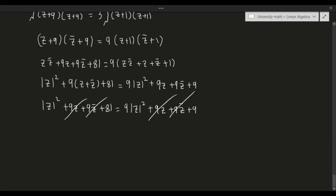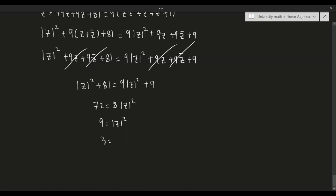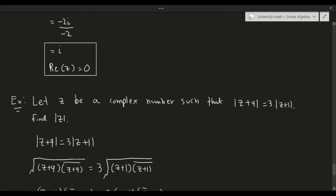Simplifying: 72 = 8|z|², so |z|² = 9. Taking the square root (absolute value is always positive): |z| = 3. That is the modulus of z, which is what we needed to find.